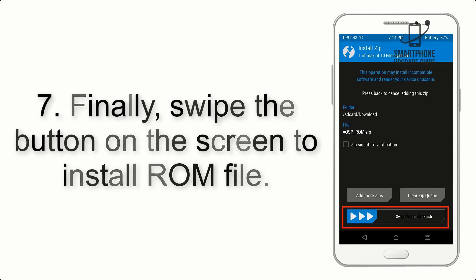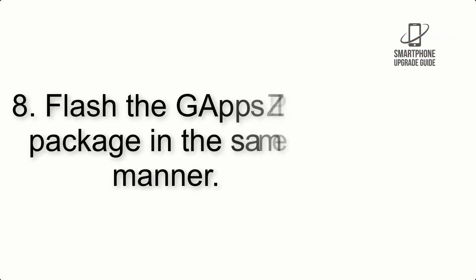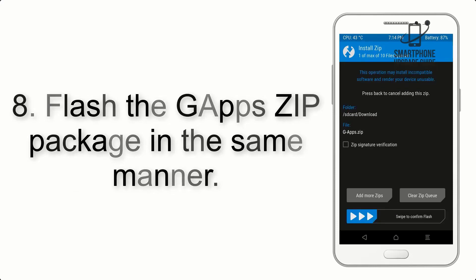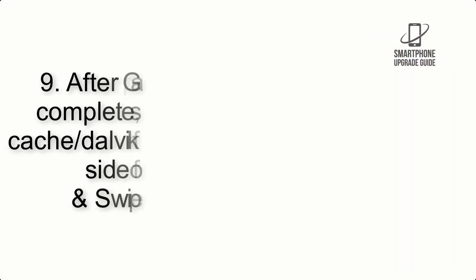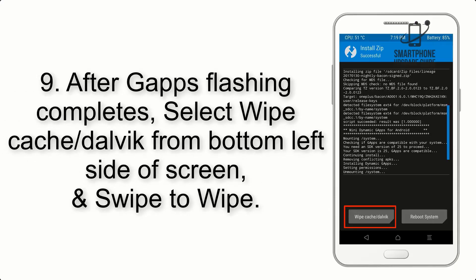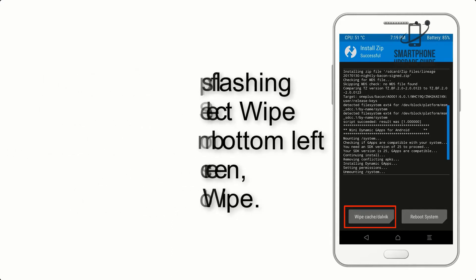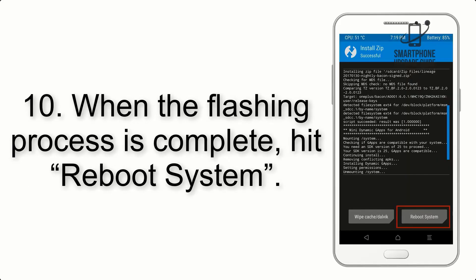Step 7: Swipe the button on the screen to install the ROM file. Step 8: Flash the GApps zip package in the same manner. Step 9: After GApps flashing completes, select Wipe Cache and Dalvik from the bottom left side of the screen and swipe to wipe.